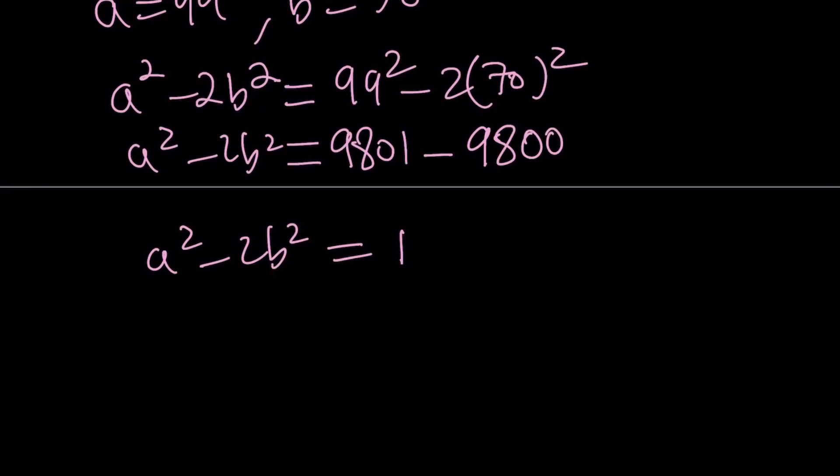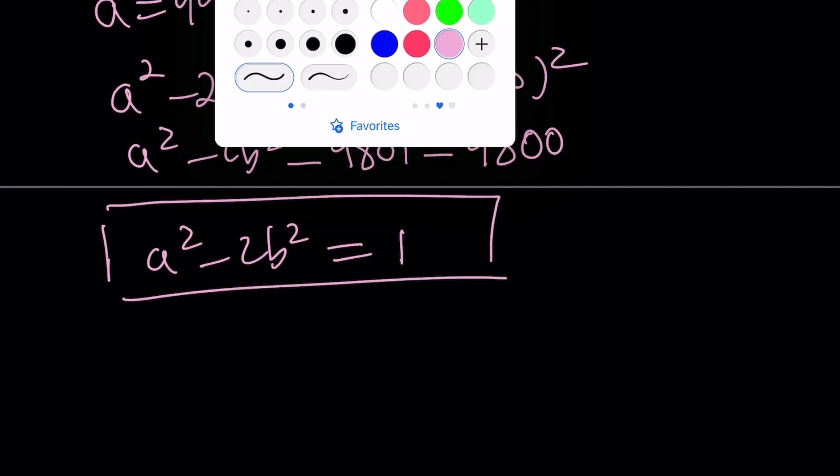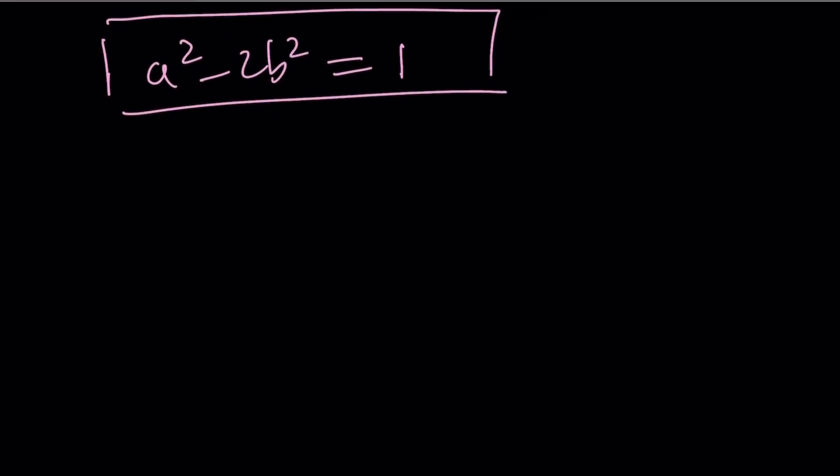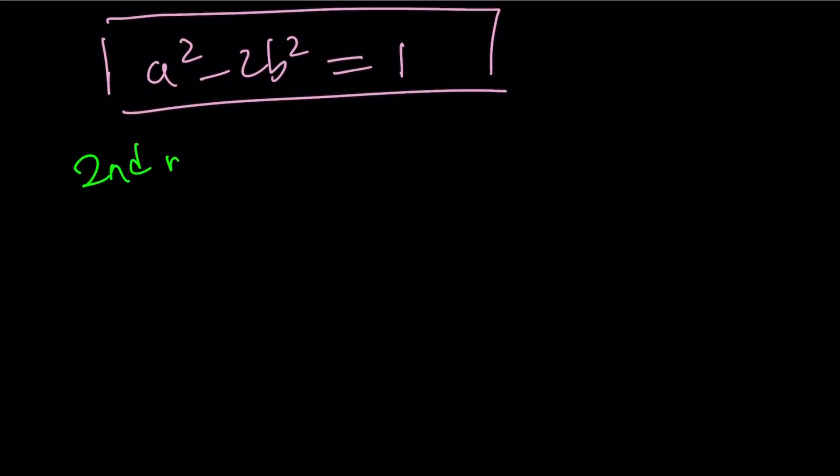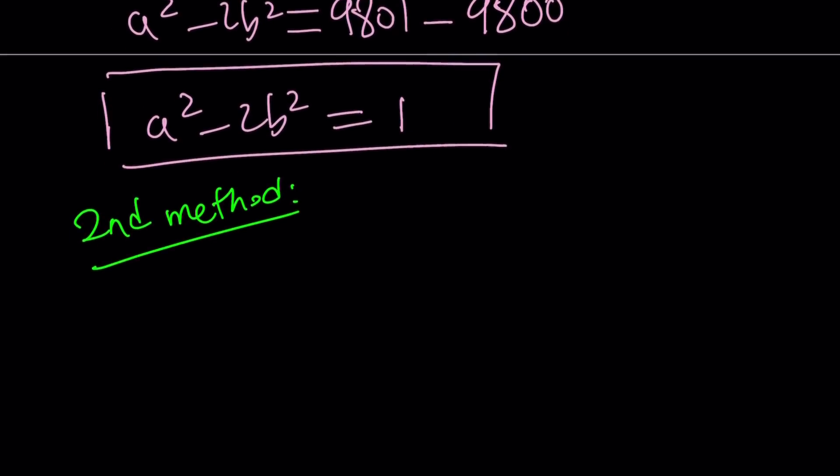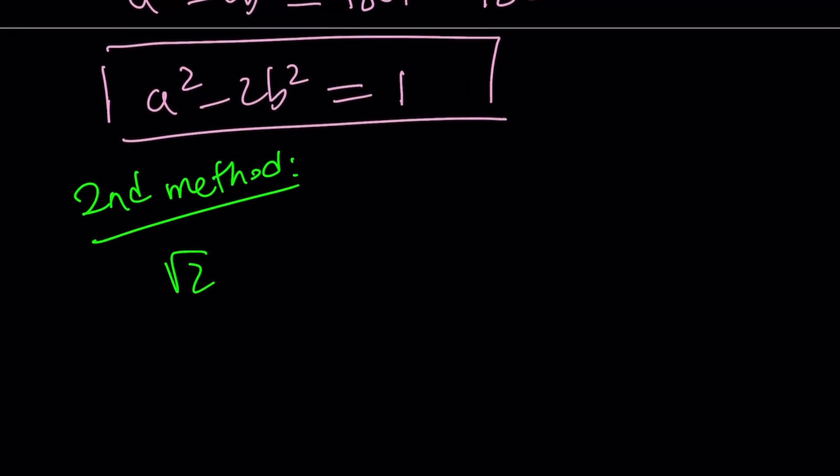Now, let's talk about the second method. And you're like thinking, there must be an easy way to solve this problem, right? So, now, we are given that square root of 2 minus 1 to the sixth power can be written as A minus B root 2, right? And A and B are integers.